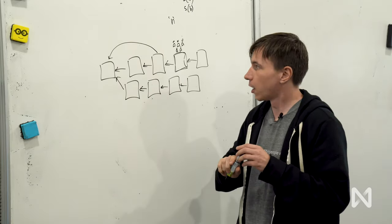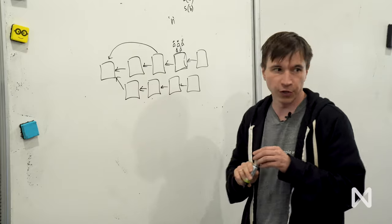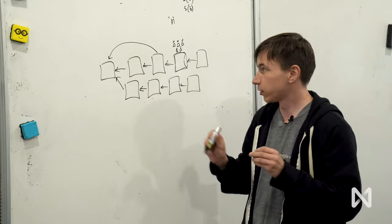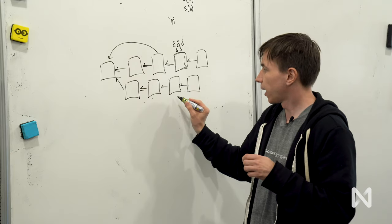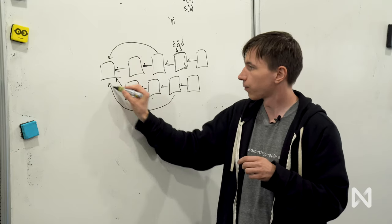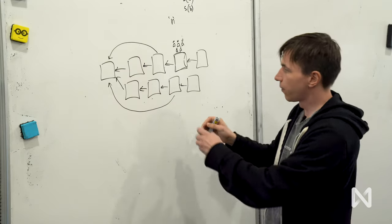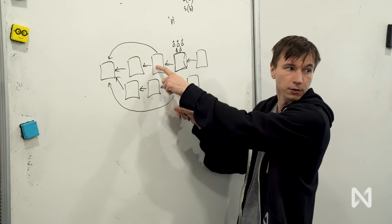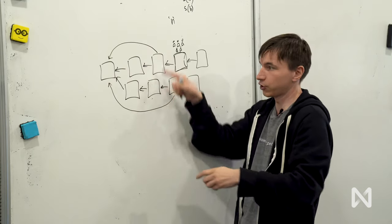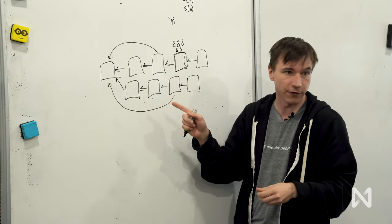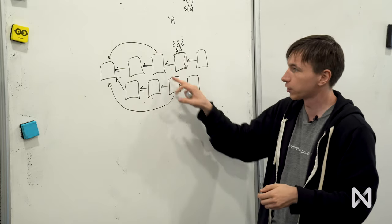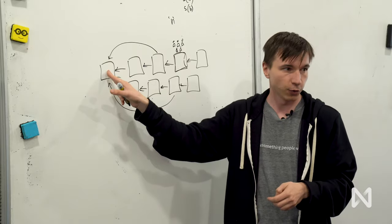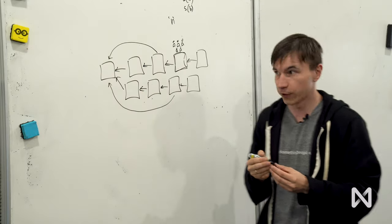For two approvals from a particular witness, there are two rules. Rule number one: if two approvals have the same reference block, then the parent blocks must be on the same chain — otherwise it is slashable behavior. What I just drew is slashable behavior because there are two parent blocks not on the same chain with the same reference block.